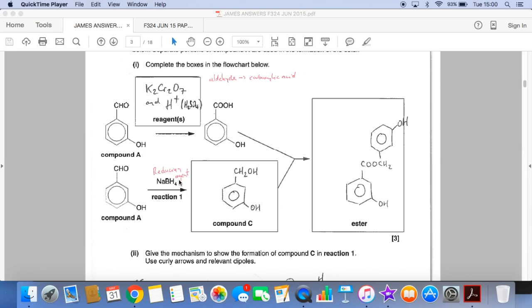NaBH4, as a little reminder, is a reducing agent. So what's it going to do? It's going to reduce the aldehyde group to a primary alcohol group. And so the structure of compound C would look like that. And then the ester will be formed by basically taking a water molecule out and forming an ester bond between this alcohol group and this carboxylic acid group. So you've got to flip this molecule around and form the ester bond like that.